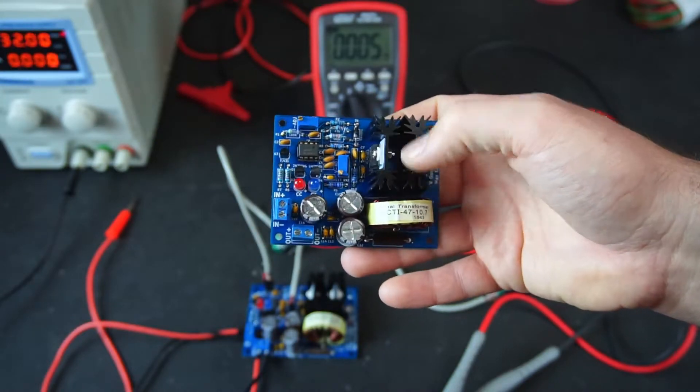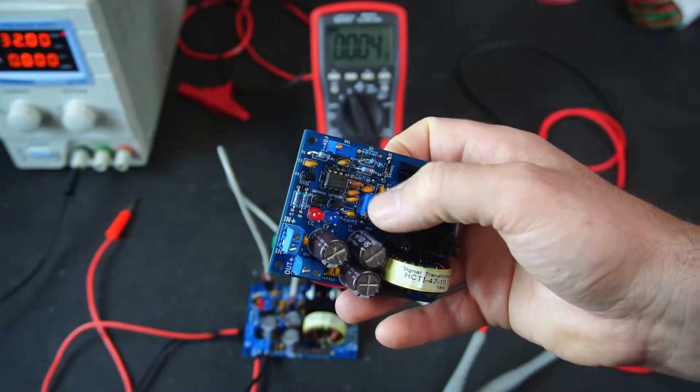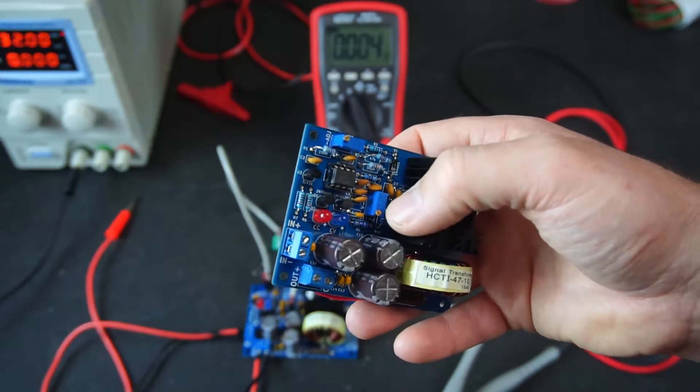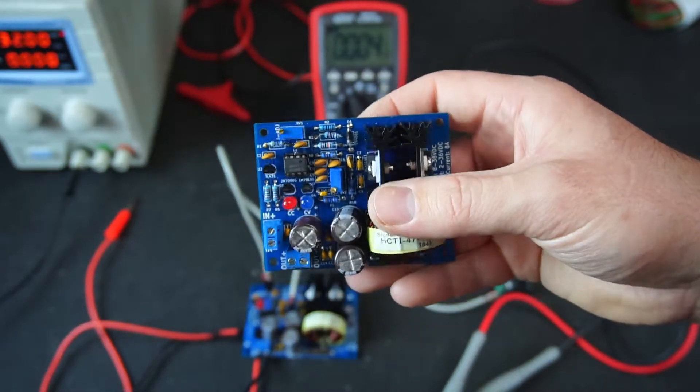Now in this edition of my buck converter you can see we've got two 10 turn trimmers down here for adjusting the voltage and current.